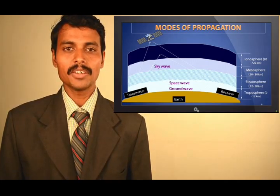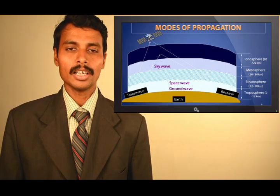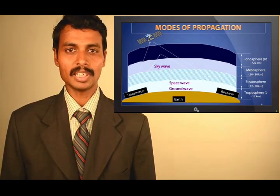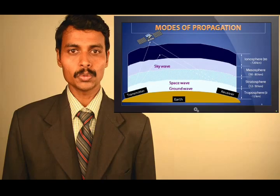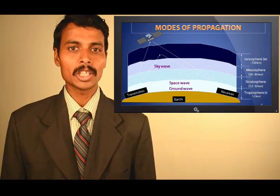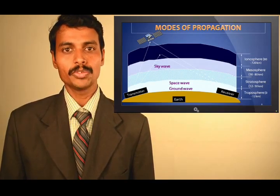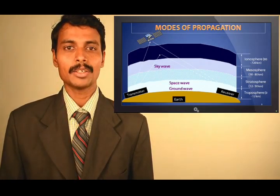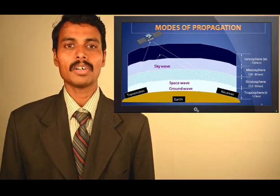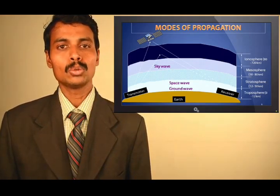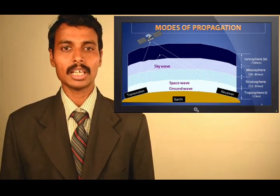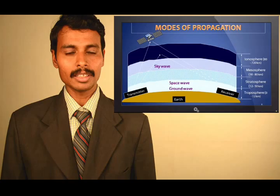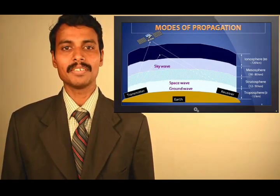These waves are transmitted between the transmitter and the receiver, taking up a certain height in the atmosphere. The different layers of the atmosphere are: troposphere from 0 to 12 km, stratosphere from 12 to 50 km, mesosphere from 50 to 80 km, and ionosphere from 80 to 720 km. Waves propagated between transmitter and receiver get reflected from any of these layers and are received at the receiver end.